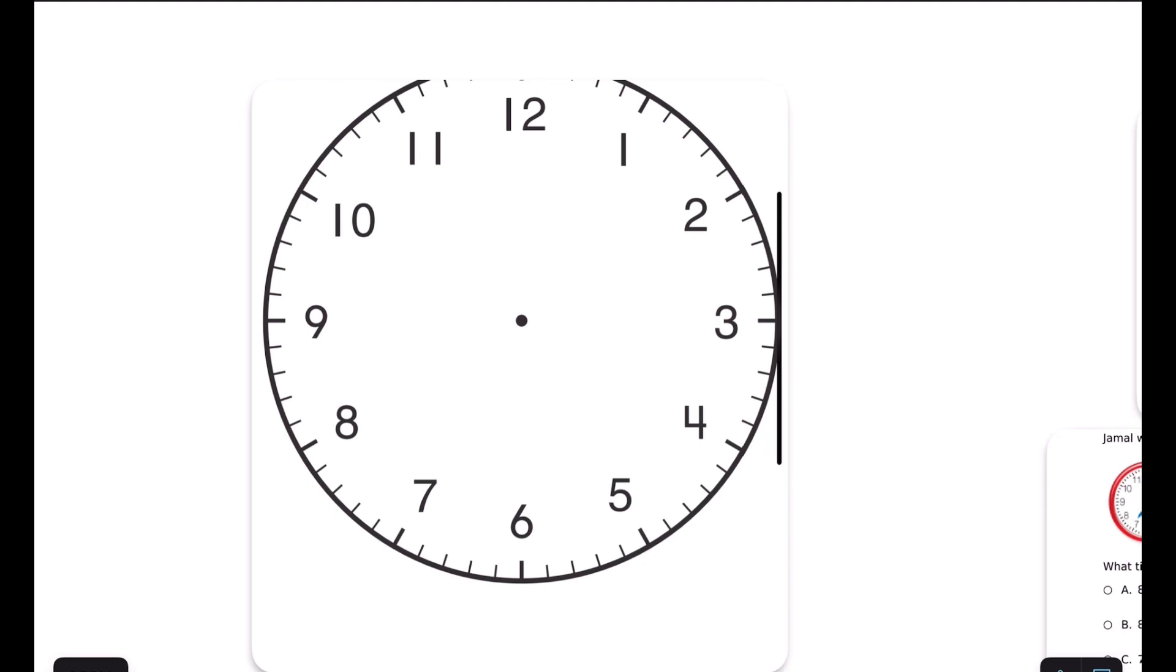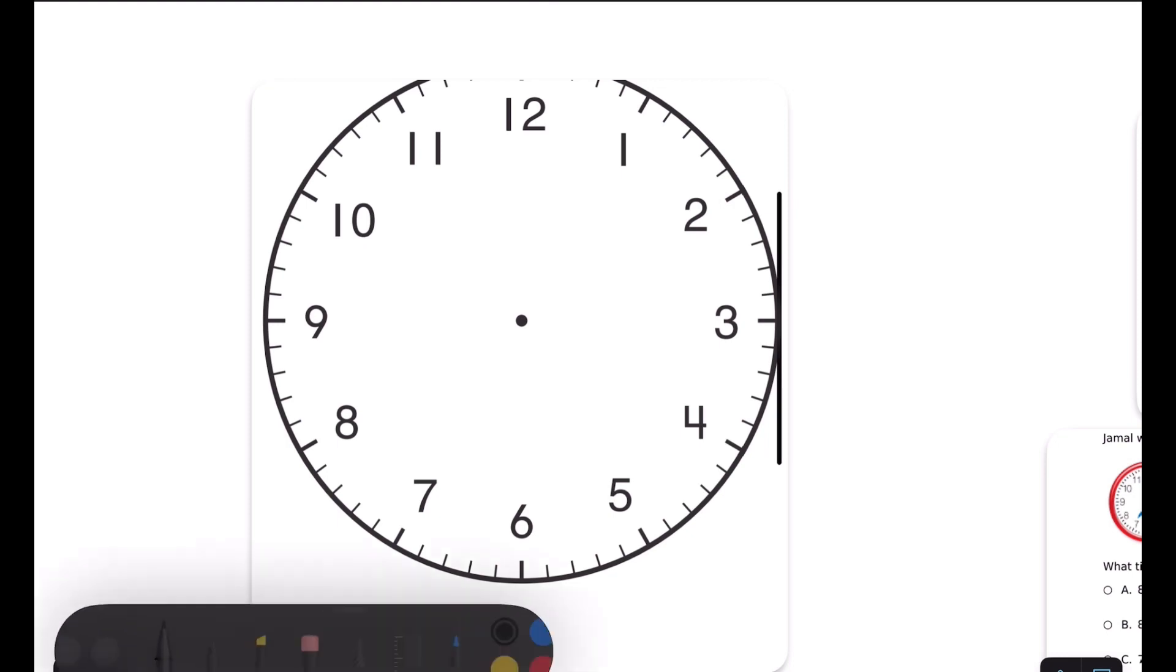For this lesson, we're going to start off with looking at an analog clock. Analog shows the face and hands to tell the time. This clock has 12 numbers.